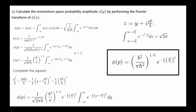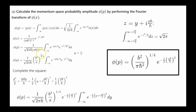Part A asks us to calculate the momentum space probability amplitude. We are given the position space probability amplitude. The Fourier transform is a basis transformation that converts a wave function from the position basis, where it describes the particle's location, to the momentum basis, where it describes the particle's momentum. This formula is the Fourier transform — this is the way you always do it in quantum mechanics. In one dimension, the momentum basis wave function is the integral from negative infinity to positive infinity of the plane waves multiplied by our wave function, which is e to the minus x squared over 2b squared.